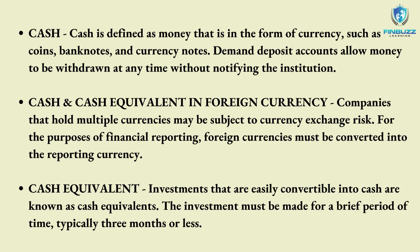The next type is foreign currency. Companies that hold multiple currencies may be subject to a currency exchange risk. For the purpose of financial reporting, foreign currencies must be converted into the reporting currency. The conversion should reproduce outcomes similar to what would have happened if the company had run its activities in only one currency. Cash and cash equivalents do not include translation losses due to currency devaluation; these losses are included in the accumulated other comprehensive income financial reporting account.